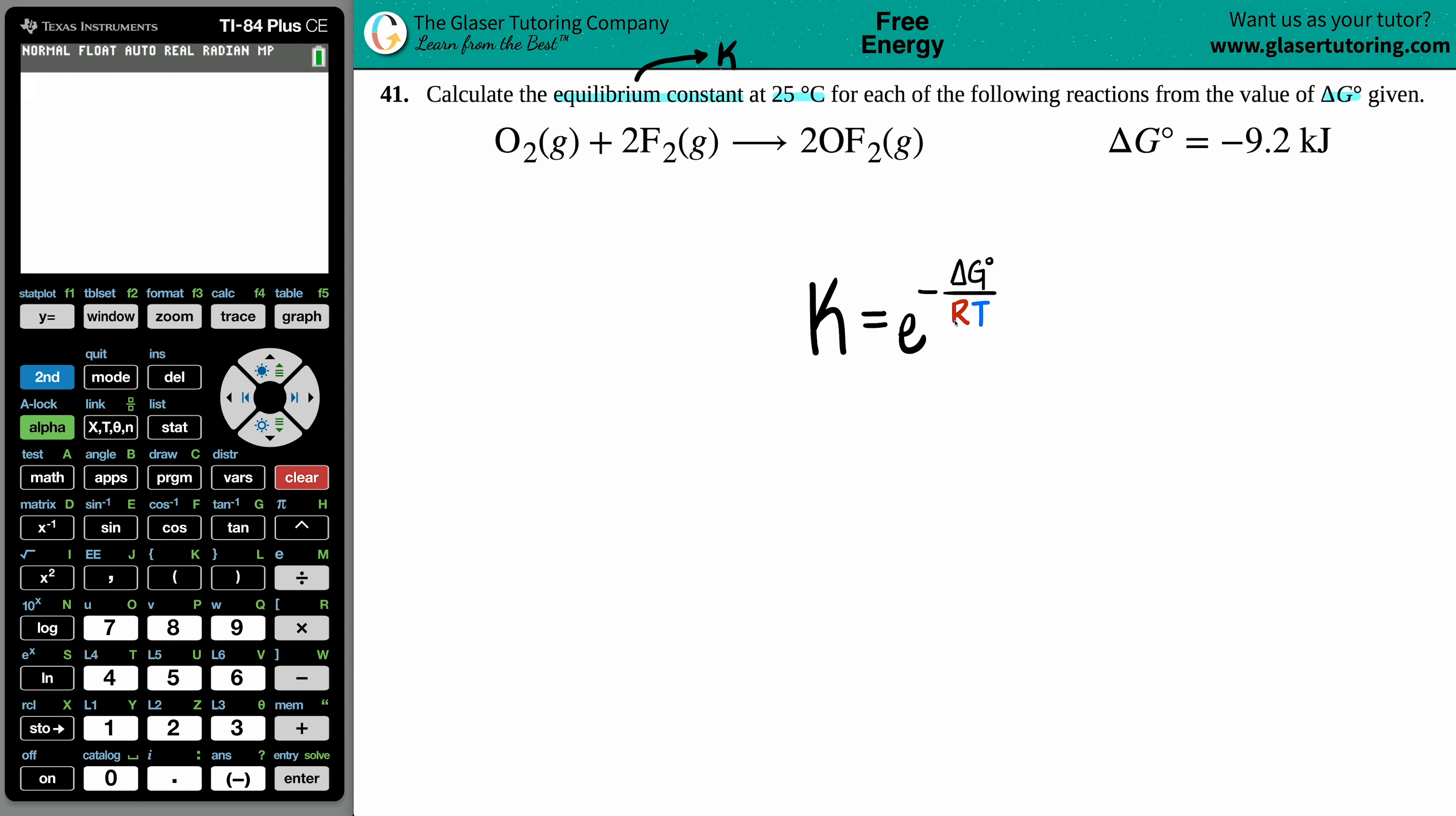Let's start with the R value. Now the R value, they didn't give it to us in this question because it's memorizable. R value is a constant number, it's 8.314, and the units are joules per mole times Kelvin.